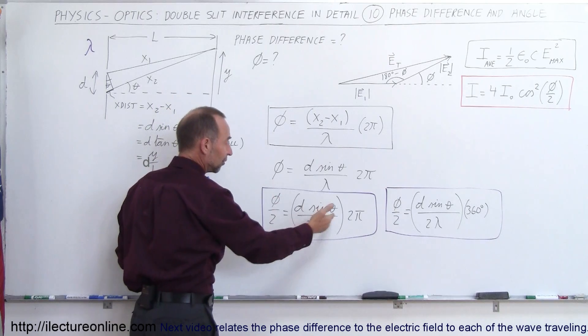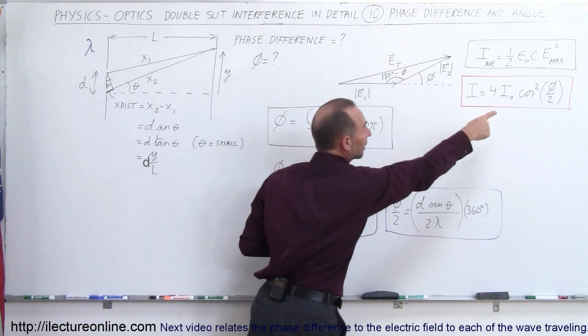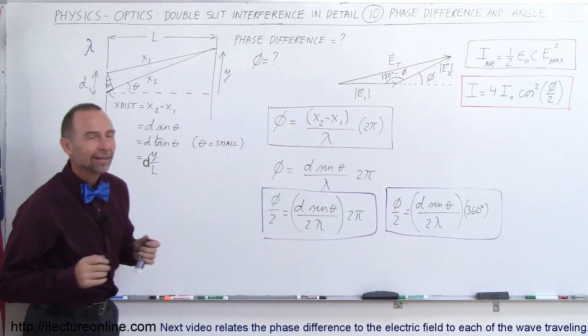Then you can find the phase difference in terms of theta, and plug that in there, and then get the intensity. And that's how we do that.